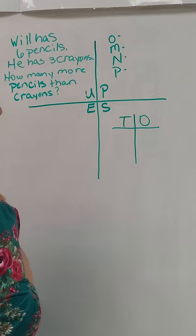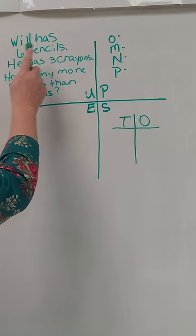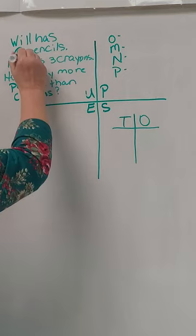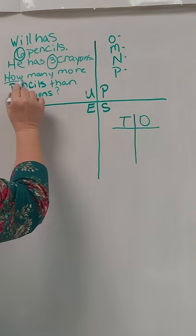So what I'm going to do is I'm going to read this problem and circle any important information in here, and I'm also going to underline the problem. So it says Will has six pencils. That number six is probably important, so I'm going to go ahead and circle it. He has three crayons. That number three is important, so I'm going to go ahead and circle that as well. How many more pencils does he have than crayons? So I'm going to underline the question that it's asking us. Okay, that's my U.